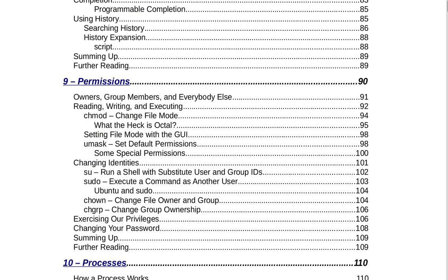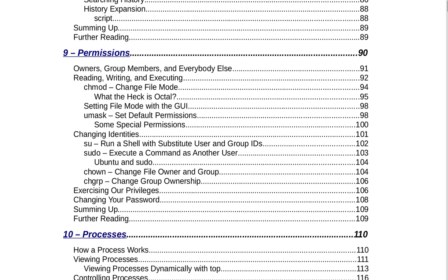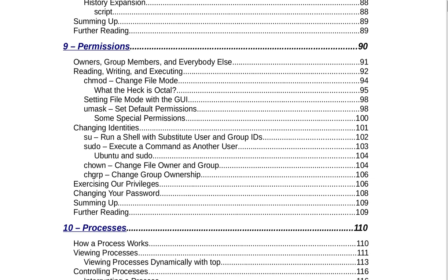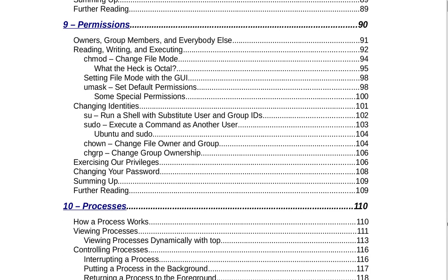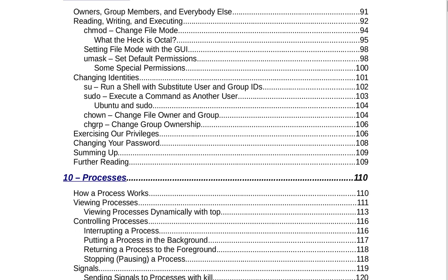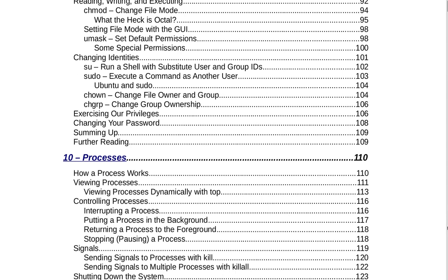Section 9 is Permissions on page 90. That covers owners, group members, and everybody else; reading, writing, and executing; chmod to change file mode, what is octal, setting file mode with the GUI, umask to set default permissions, some special permissions, changing identities, su to run a shell with substitute user and group IDs, sudo to execute a command as another user, Ubuntu and sudo, chown to change file owner and group, chgrp to change group ownership, exercising our privileges, changing your password, summing up, and further reading.